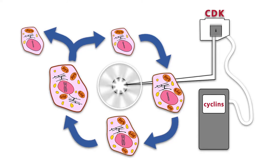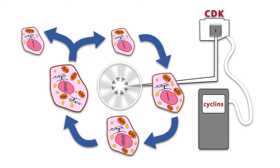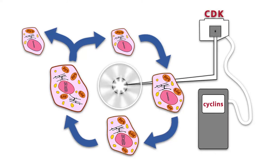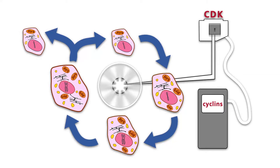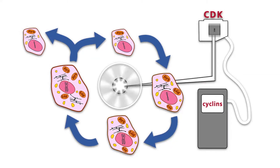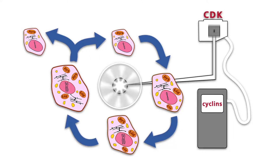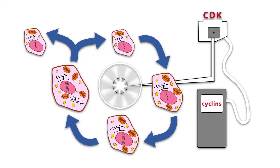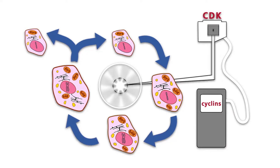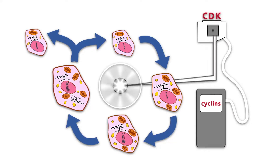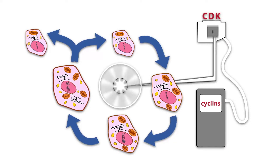Aberrant cyclins are responsible for the uncontrolled proliferation of tumor cells. For example, in many breast tumors and in certain types of leukemia, the proto-oncogene encoding cyclin D1 is overexpressed or overactivated.